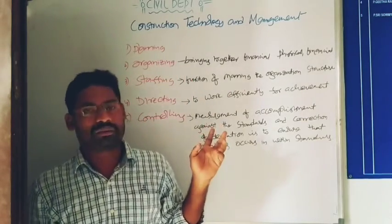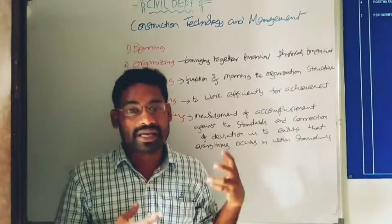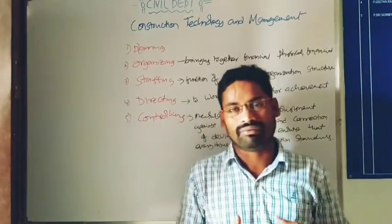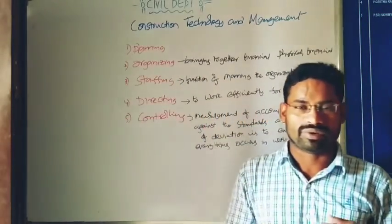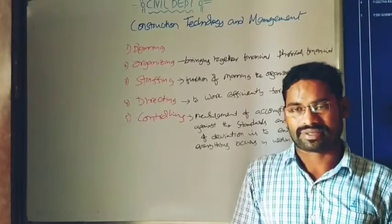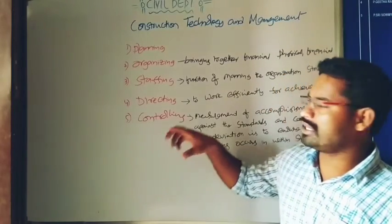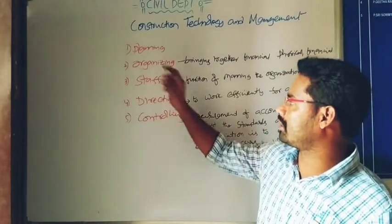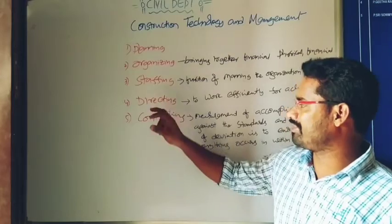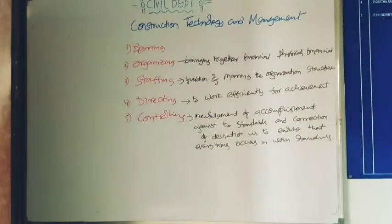These are all about planning, organizing, staffing, directing, and controlling — the functions a project manager must work with. Now I'm going to explain in detail what organizing, staffing, directing, and controlling are, so listen carefully.